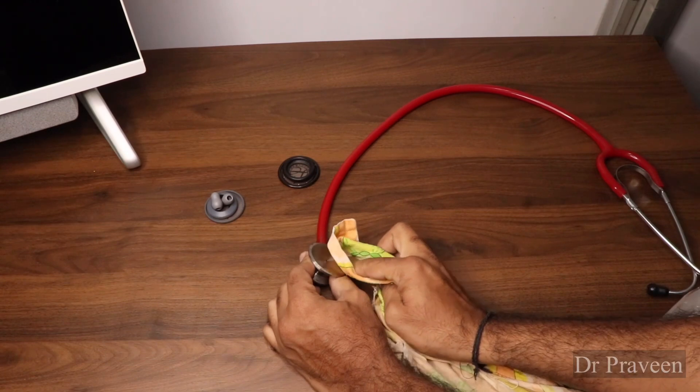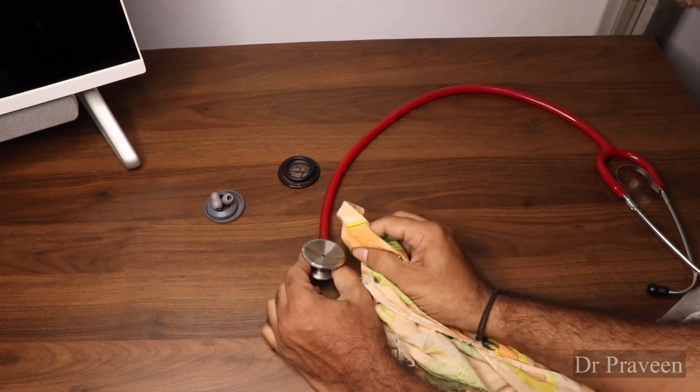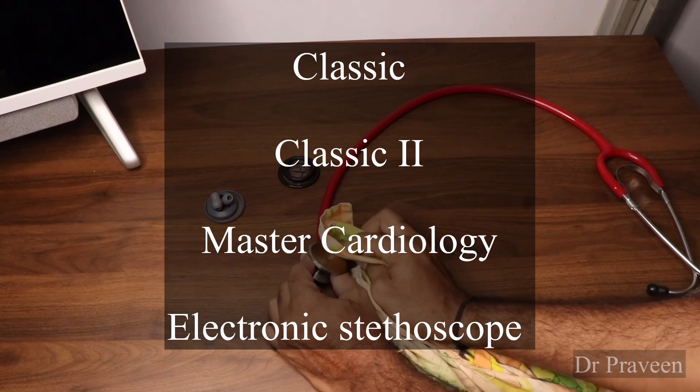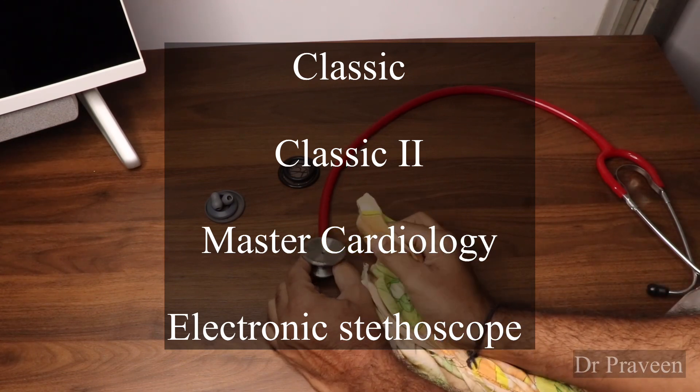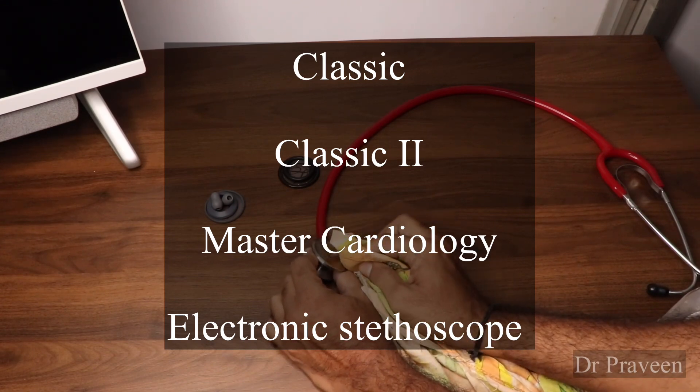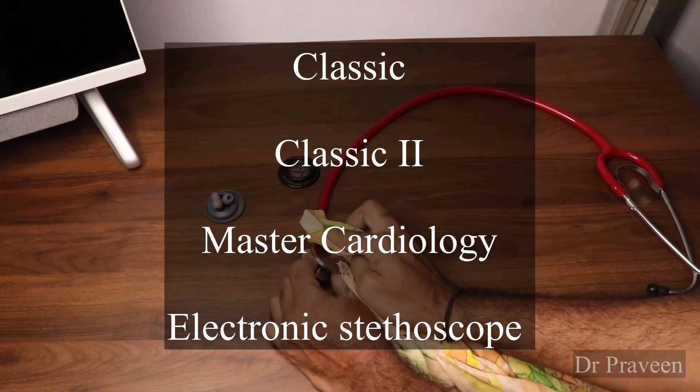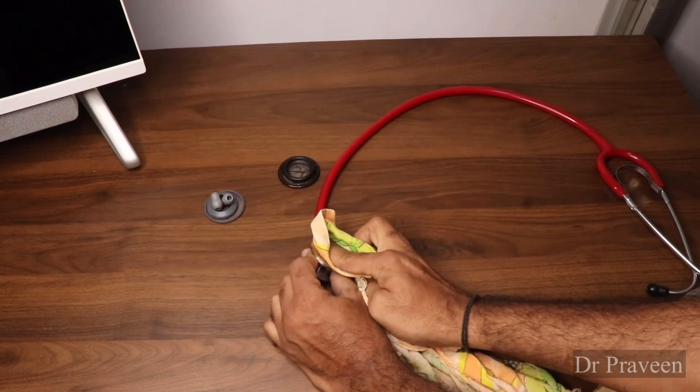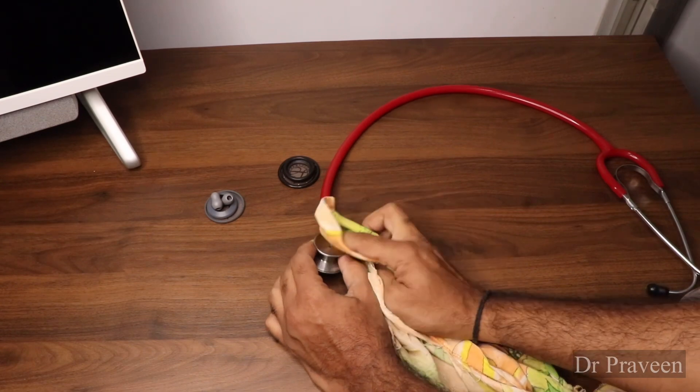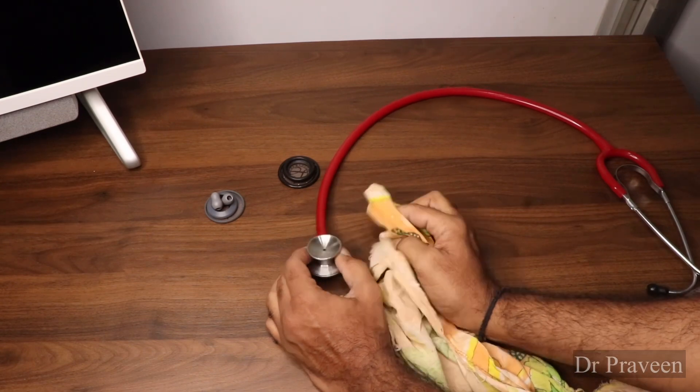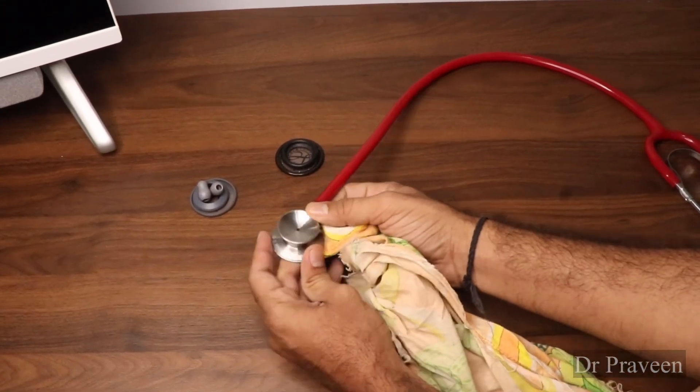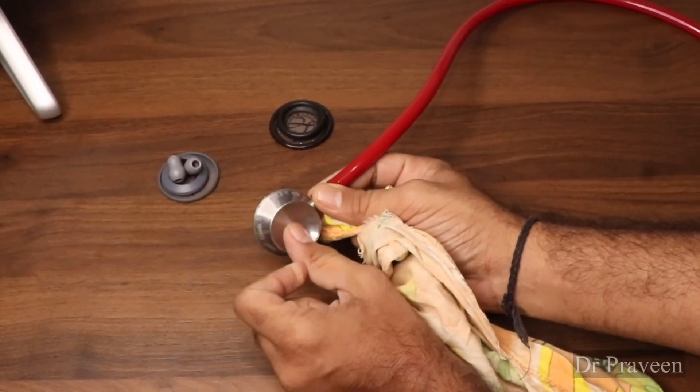There are different variants of Littmann scopes that come. Classic II SE is the most commonly used, and next to this version the cardiac version comes, which has the diaphragm on either side of the chest piece. This is the Classic II SE.